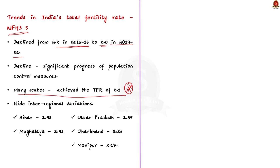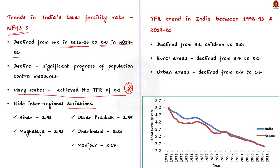According to the National Family Health Survey 5, there are wide inter-regional variations between the states in India. There are five states which still have not achieved a replacement level fertility of 2.1. These five states are Bihar, Meghalaya, Uttar Pradesh, Jharkhand, and Manipur.